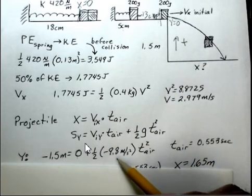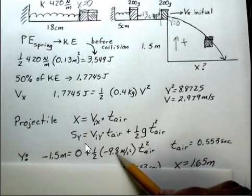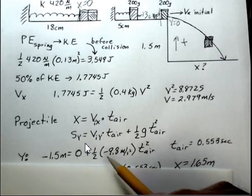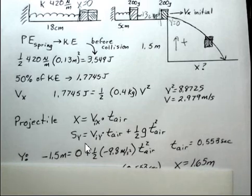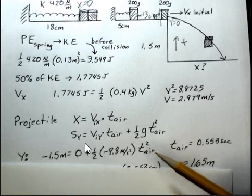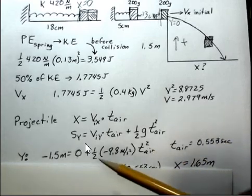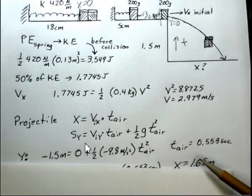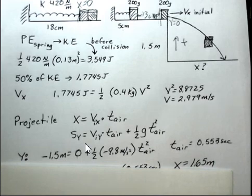1/2. The acceleration due to gravity is downward. That's the negative direction. So I attach a minus sign to the 9.8 meters per second squared. And then time squared. So again, pause, use your calculator. I found time in the air to be 0.553 seconds.